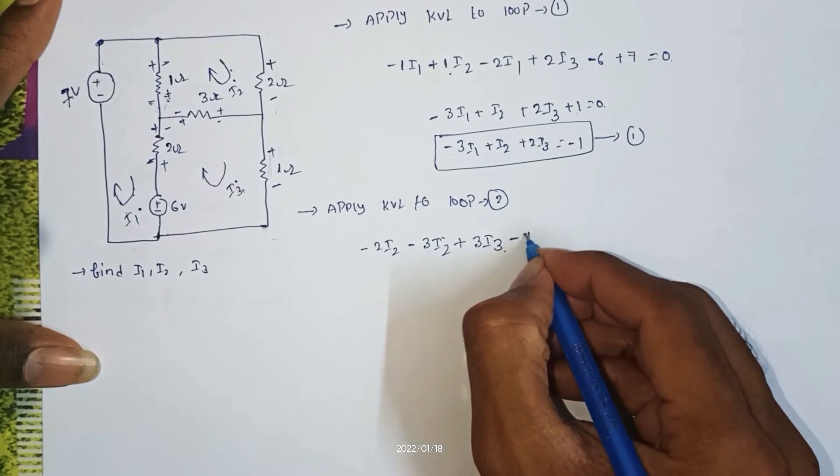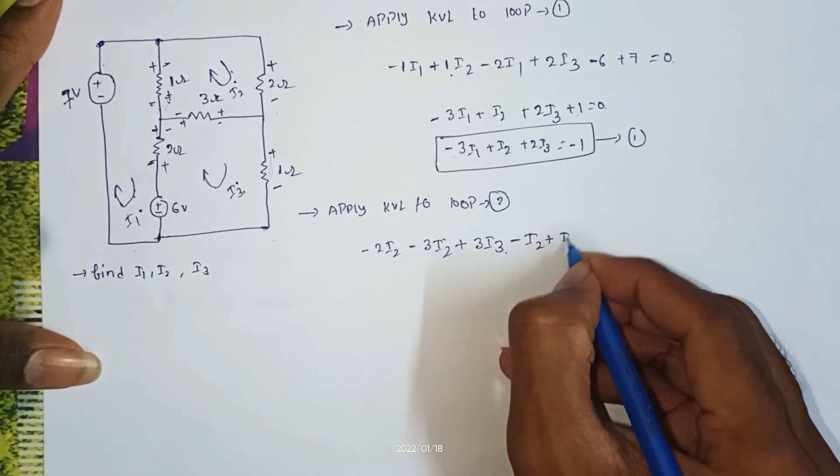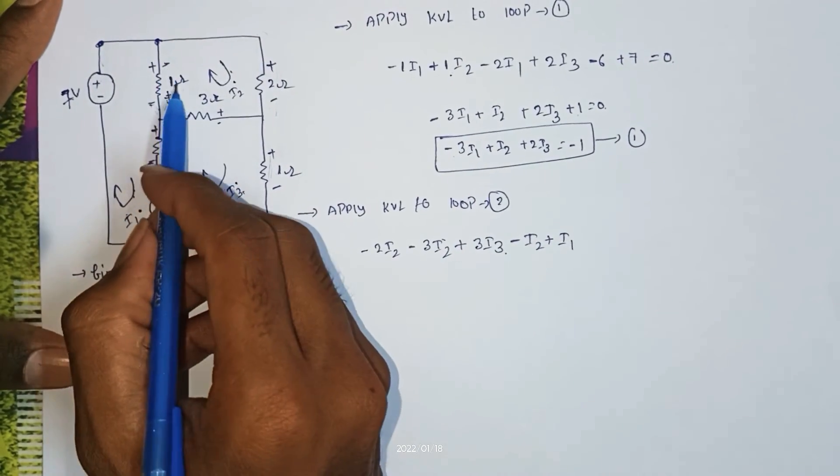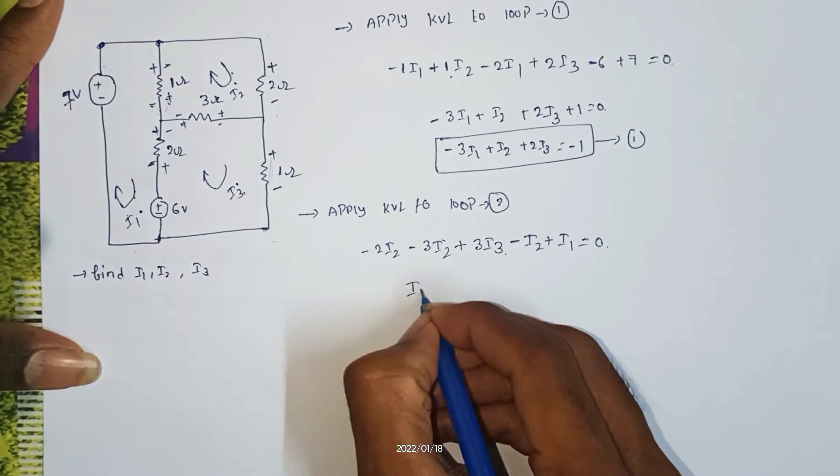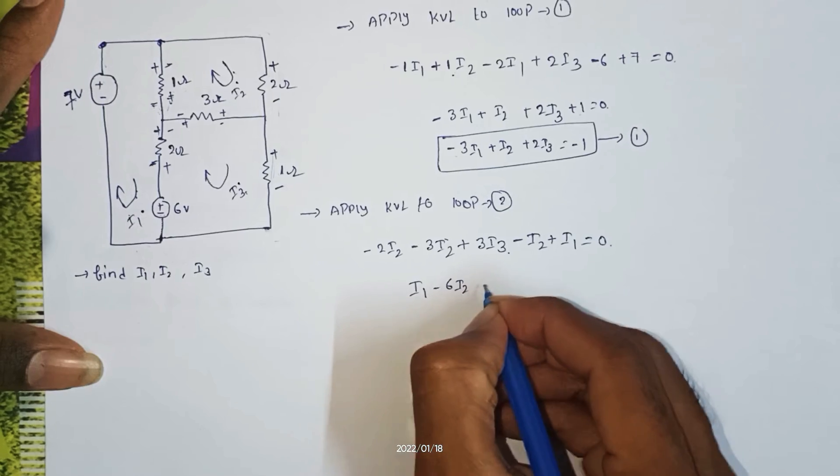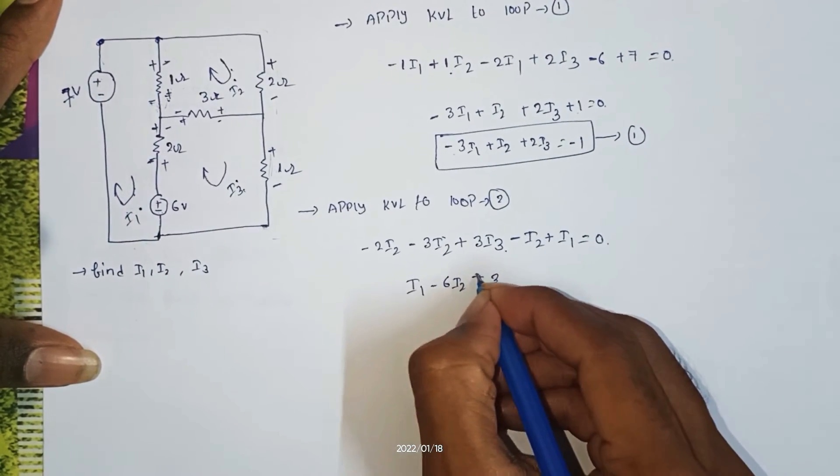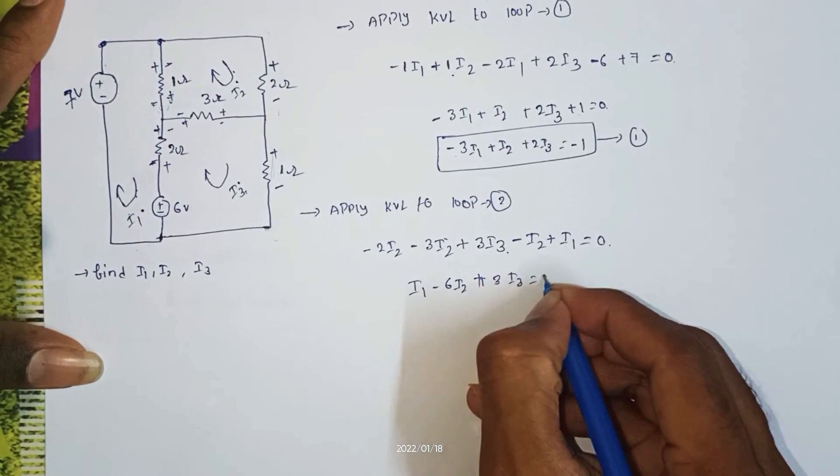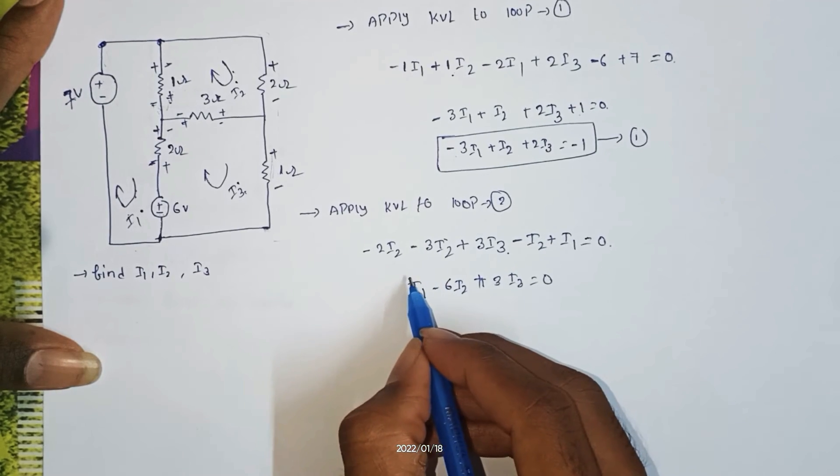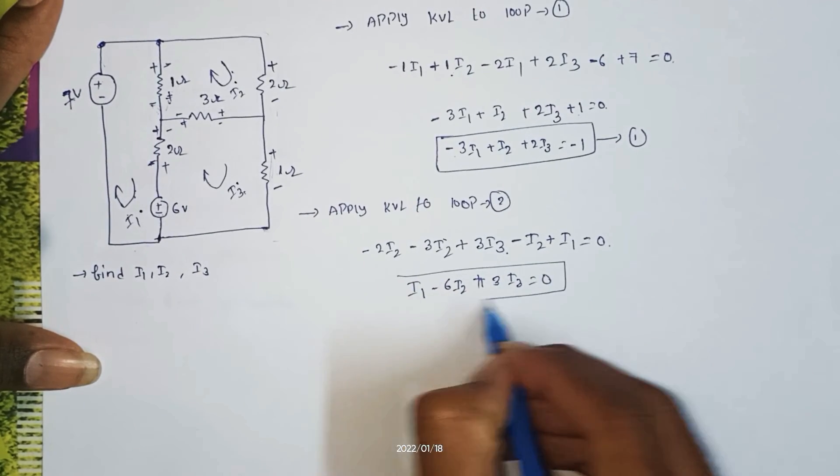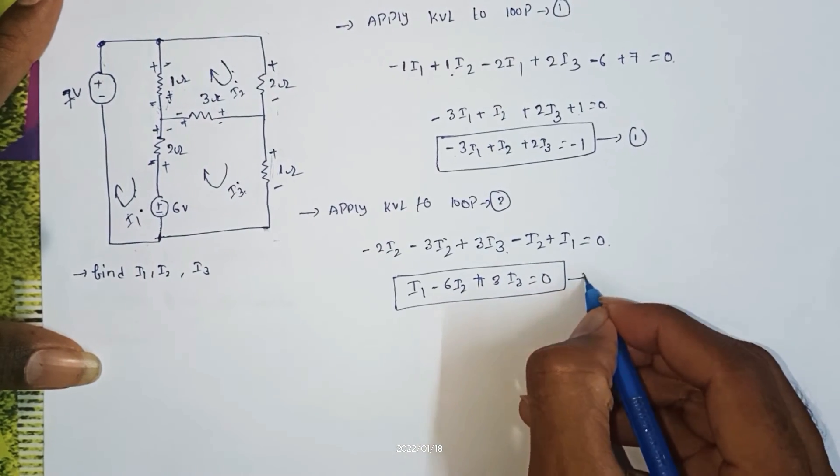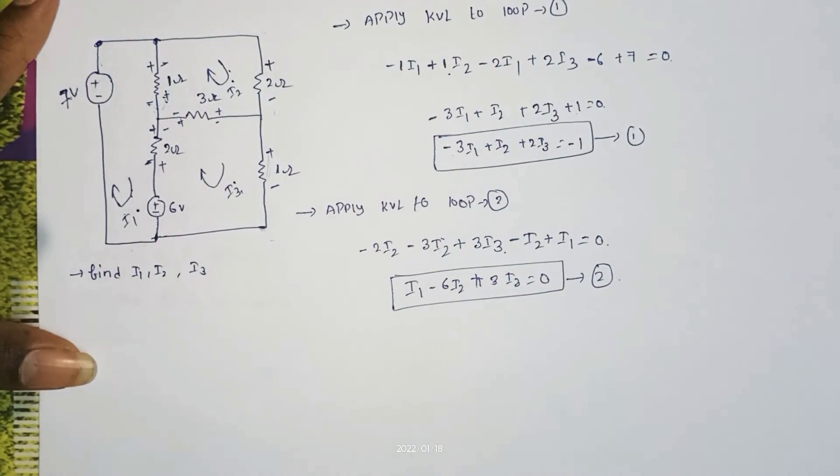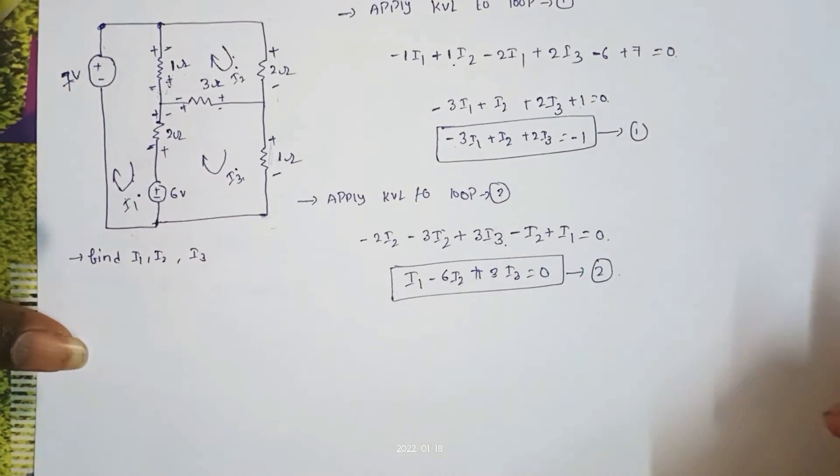I1 minus 6 I2 plus 3 I2 plus I1, so minus I2 and plus I1 equal to zero. So I1 minus 6 I2 plus 3 I3 equal to zero. 6 I2 plus 3 I3 equal to equation 2.